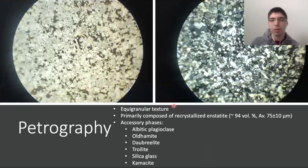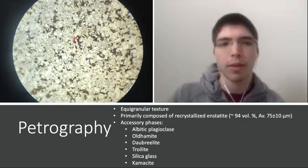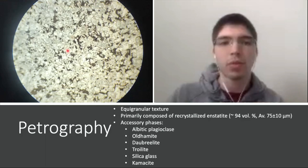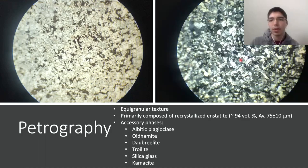The next thing to do is look at it under thin section. I did photography work — this is in plain polarized light, and this is in cross polarized light. The first thing I noticed was an equigranular texture, meaning the relative grain size between all the major grains is, for the most part, similar. In this case, most of these grains were actually made up of recrystallized enstatite. You can see the low interference colors, the low birefringence. About 94 volume percent of this sample is recrystallized enstatite.